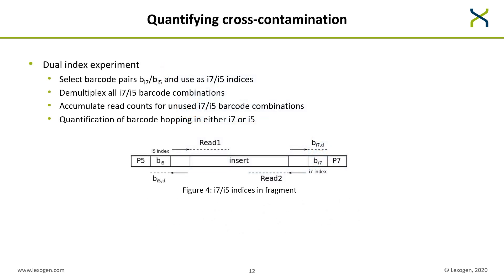To quantify the cross-contamination achievable with our barcodes, we performed dual index experiments. In a dual index experiment, one selects barcode pairs P7 and P5 and uses them as I7 and I5 indices. A sequenced fragment is flanked by the P5 and P7 adapters followed by the I5 and I7 indices chosen from our barcode set. We demultiplex with respect to all barcode combinations — not just the ones used in the experiment — and accumulate read counts for unexpected I7 and I5 barcode combinations. This tells us how often one barcode changes into another, the phenomenon called barcode hopping.